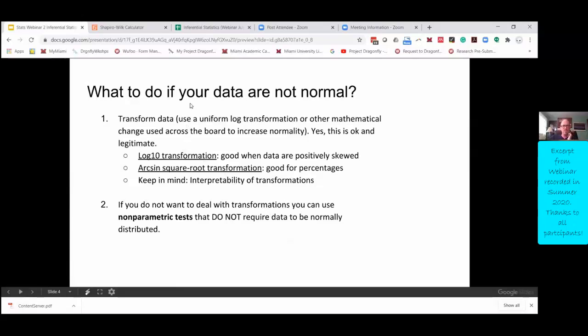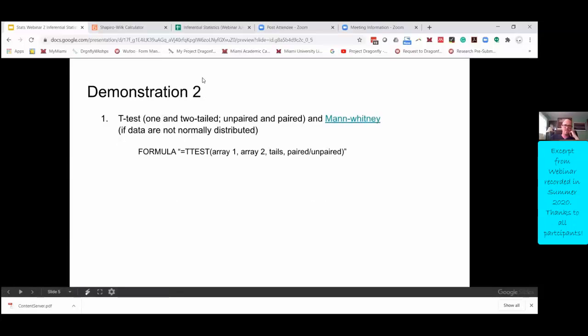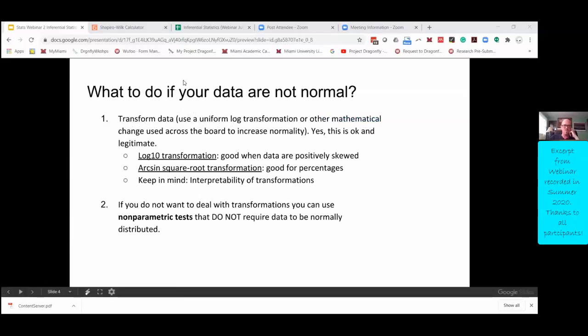So what do you do if your data is not normally distributed? One of the things I remember being totally surprised about is that you can just transform your data.